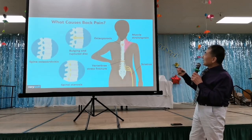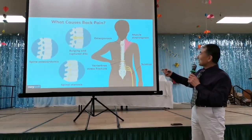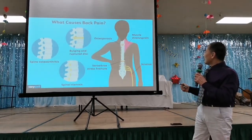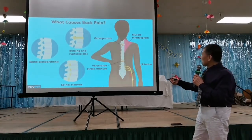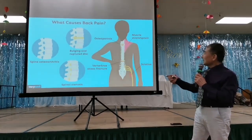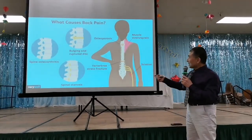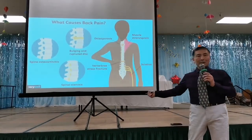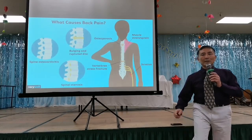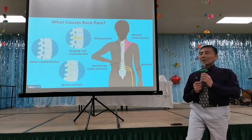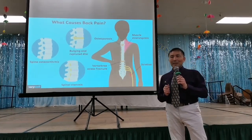Next: muscle sprain. It could be in any part of the lower back. Then pinched nerve — sciatica. This is very tricky. The sacrum corresponds to the lower leg, heel, or whole foot, or ankle.